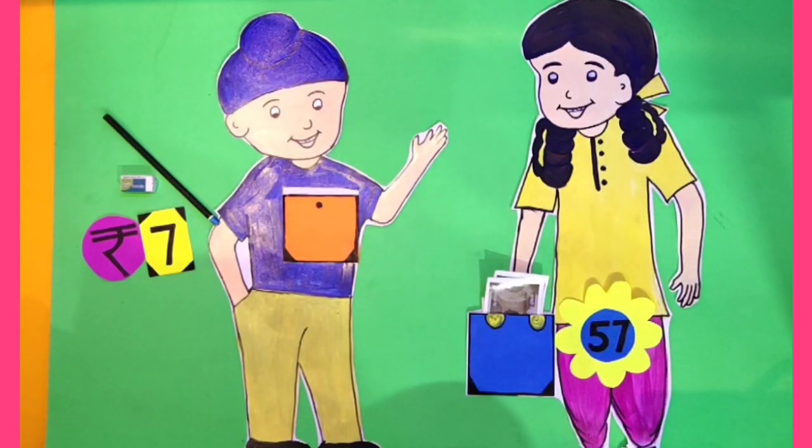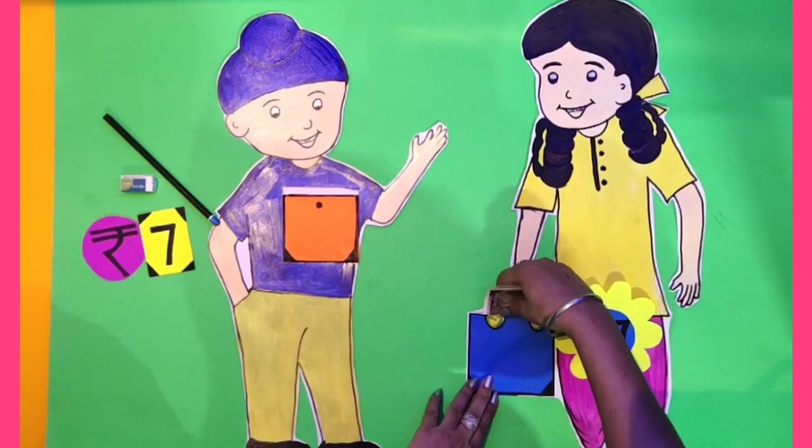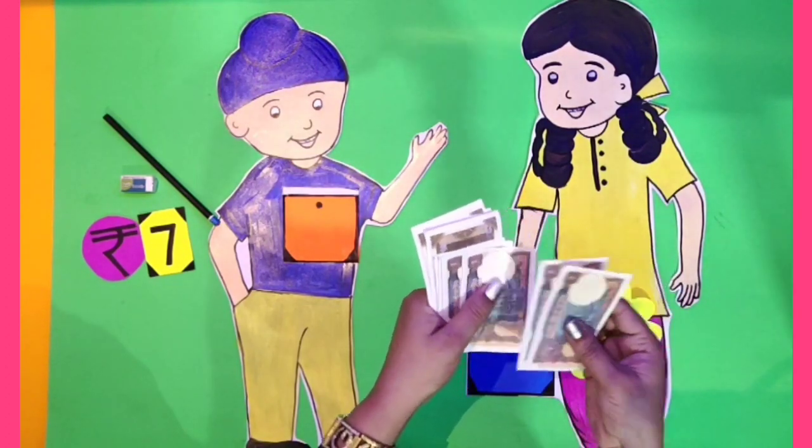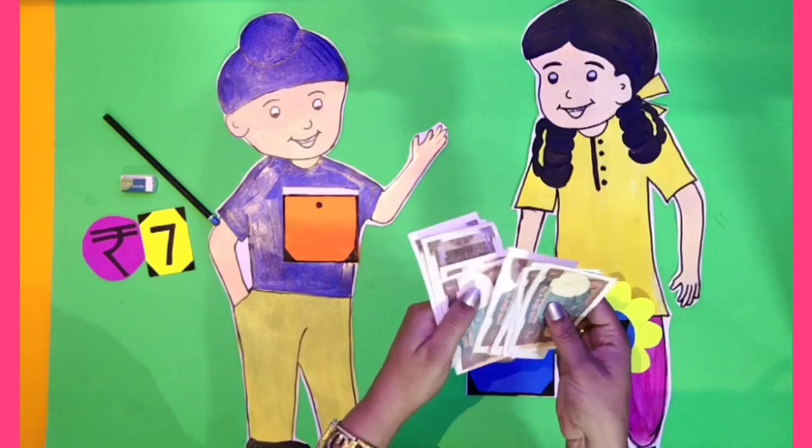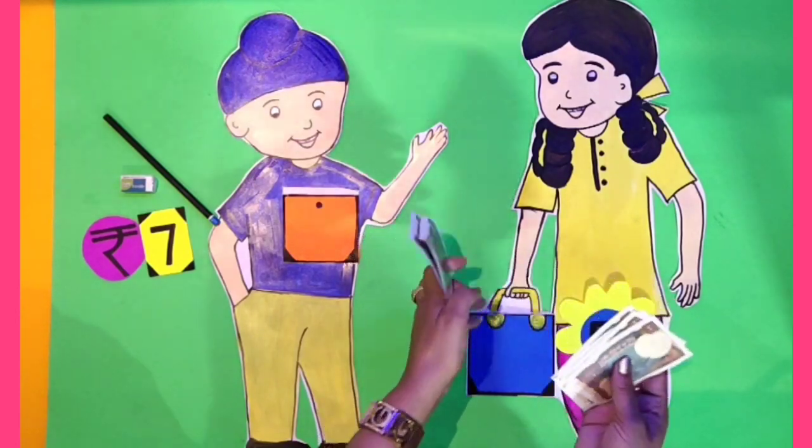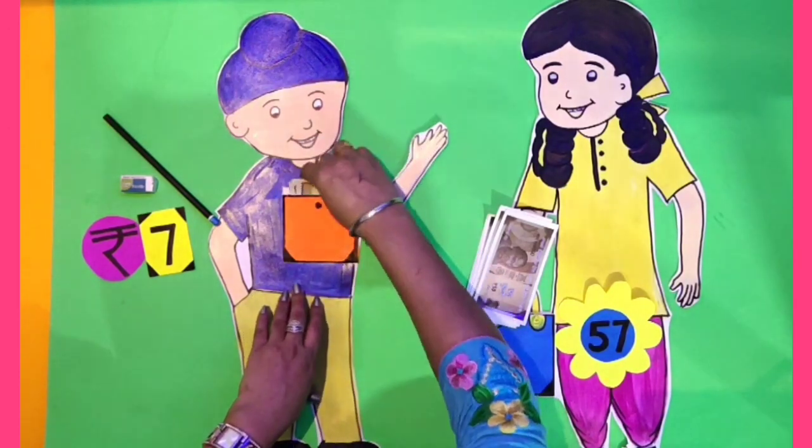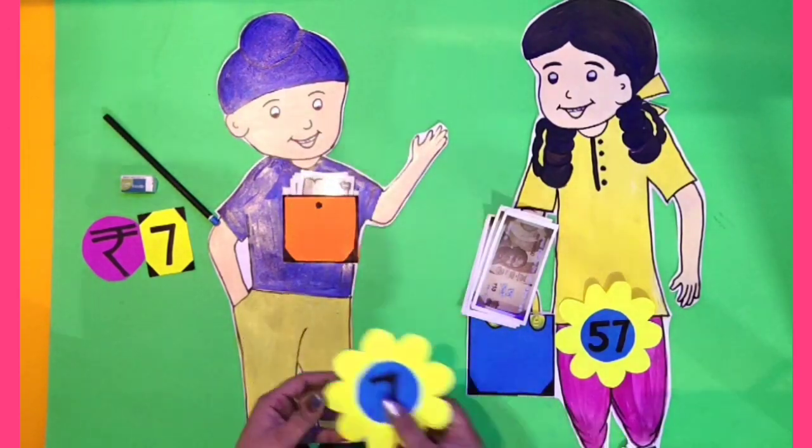Now she gives 7 rupees to Sukman. Let's take out 7 rupees. 1, 2, 3, 4, 5, 6, 7. So she gives 7 rupees to Sukman.